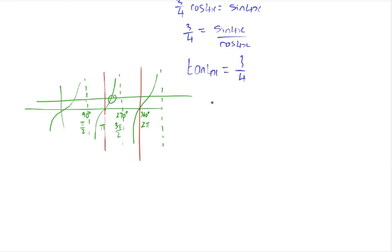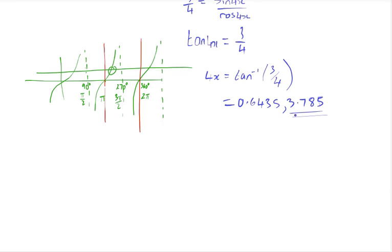Take an arc tan of 3 quarters. 4x equals 0.6435. To get the next solution, remember tan repeats every 180 degrees. So we'll add 180 or pi to this answer to get 3.785. This is the answer that we are looking for, because it's in the region that we've just drawn here. But remember this is what 4x equals. Dividing this by 4 gives us 0.9463.